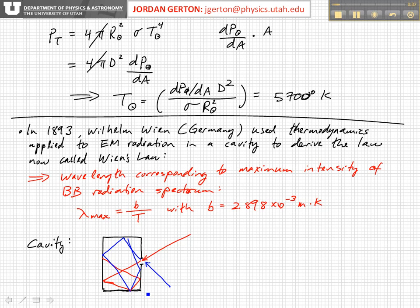The radiation which comes out of the hole is basically at some temperature. You can define a temperature for the cavity and the radiation inside the cavity. The fraction of that which comes out of the hole can be thought of as thermal radiation.